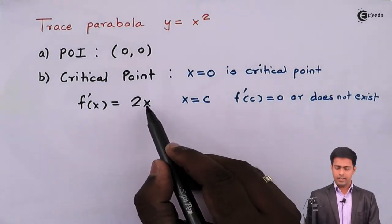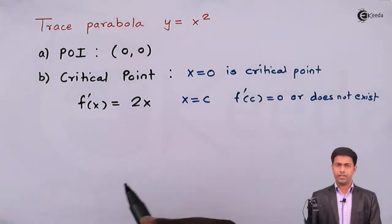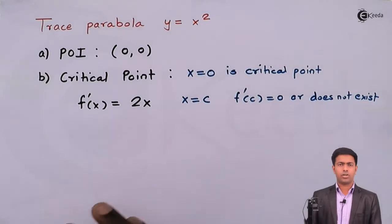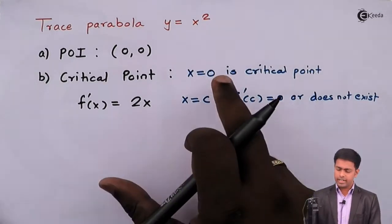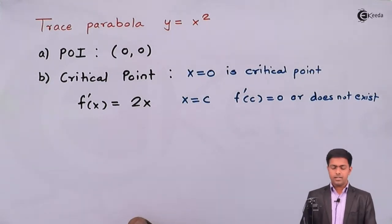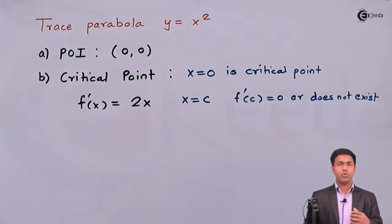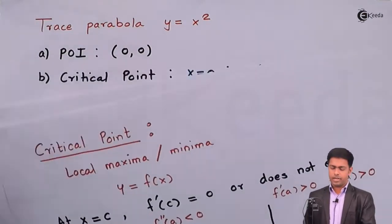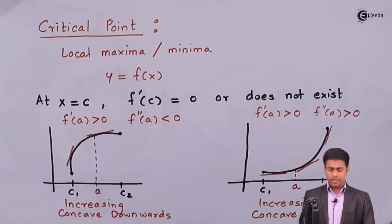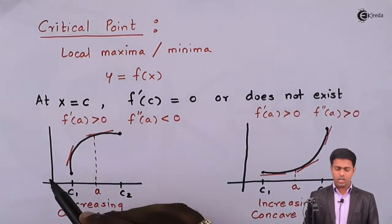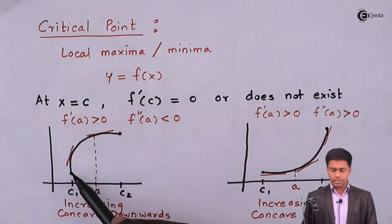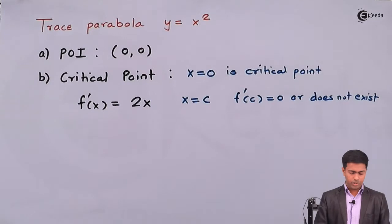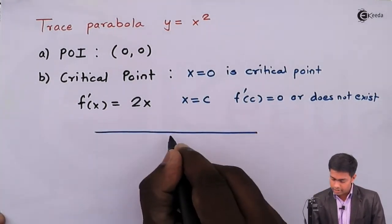If we put x = infinity, we get f'(x) = infinity, which could also be a critical point, but since infinity is not a finite point, we won't consider it. So x = 0 is our only critical point. To understand the shape of the curve, we analyze the behavior between critical points. Since we only have one critical point, we consider the two regions: 0 to infinity and negative infinity to 0.